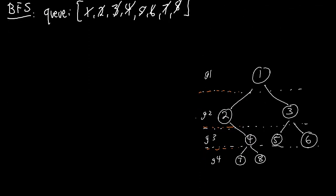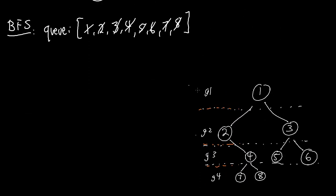So how does BFS help us? Notice that we've been going through our family tree in generations - here is gen 1, then everybody in gen 2, then everybody in gen 3, then everybody in gen 4. A normal BFS doesn't give you this information, so this is where we're going to have to modify it to be able to know the generation boundaries.